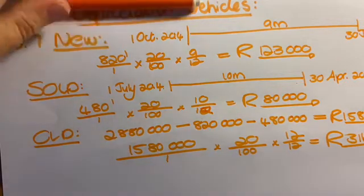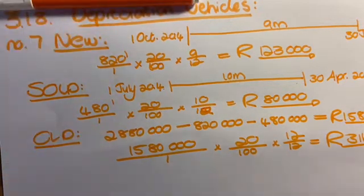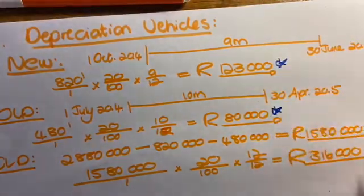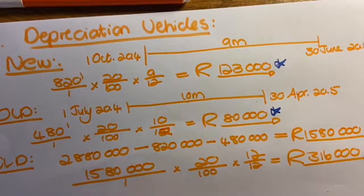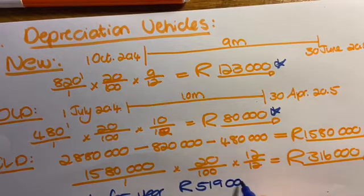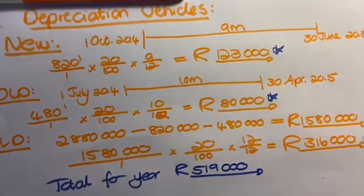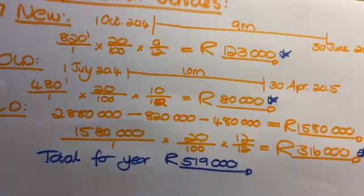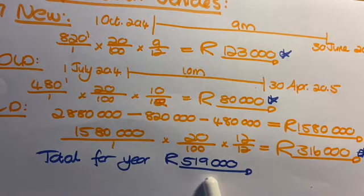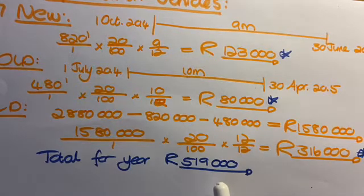So in total, if you now have to go back, and you add these 3 amounts, so you've got the new one, the sold one, and the old one. Your total depreciation for the year comes to, if you add those all up, 519. So when you go to your balance sheet, and you're busy with note 3, this number 519 is going to come into play, because you're going to put it under depreciation in the middle with movements.